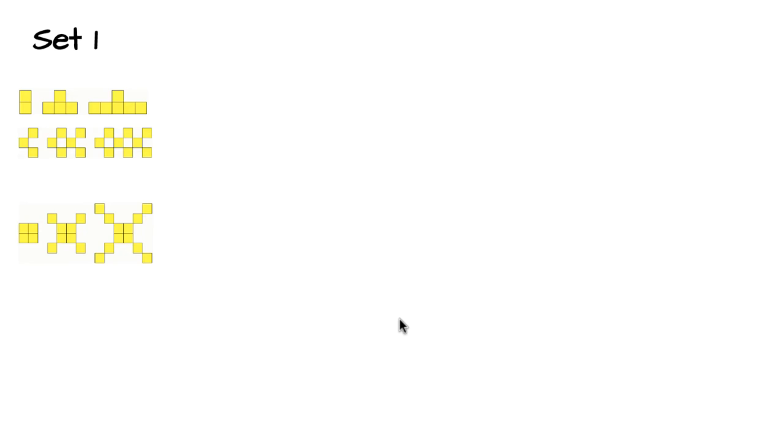Once each group of students has their pattern, we want them to use color tiles, whether they be virtual or real, or some other type of manipulative. We want them to represent these three terms plus the next two terms in the pattern using a different color to represent how the pattern changes each time. So let's see how that might look for this first pattern.